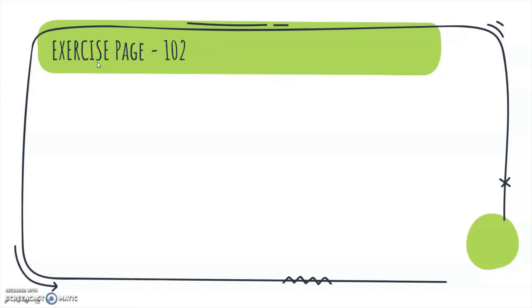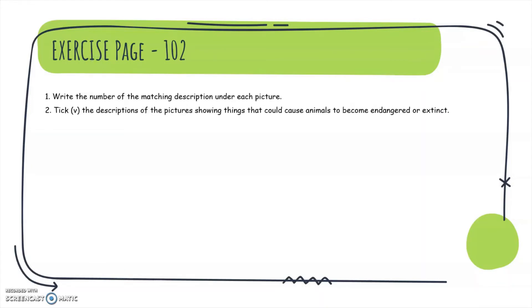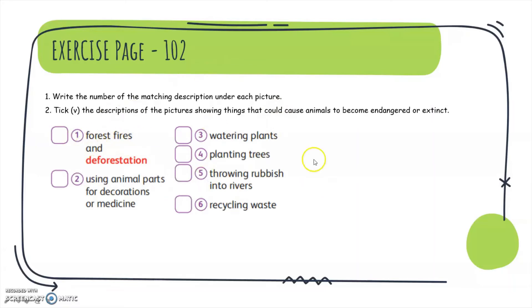Now open your book to page 102 and do the exercise. There are two questions. Write the number of the matching description under each picture. Then circle the descriptions of pictures showing things that could cause animals to become endangered or extinct. The descriptions are numbered one to six.